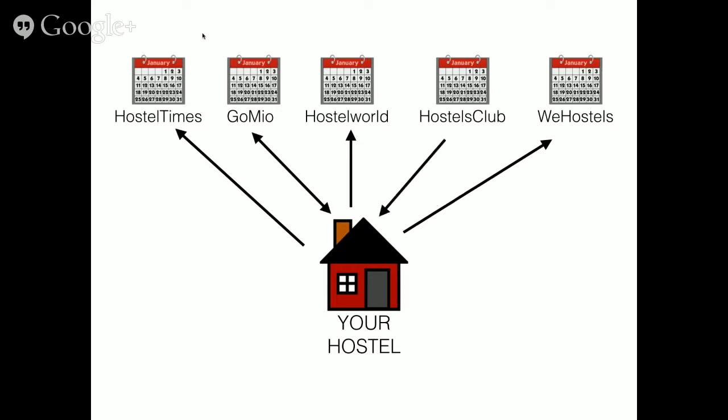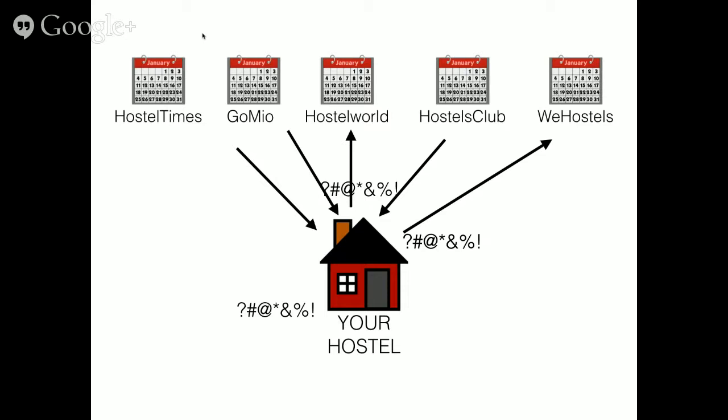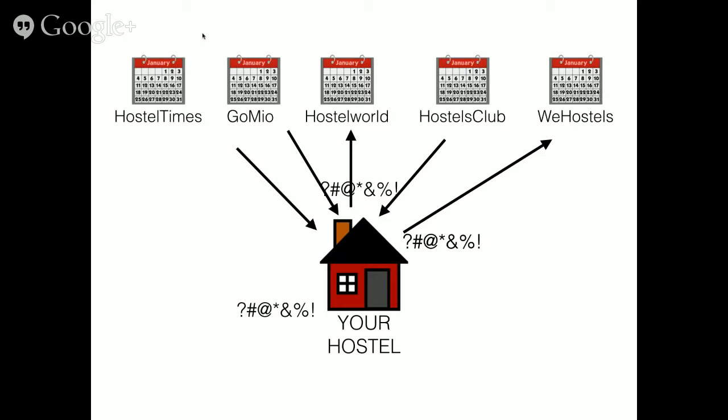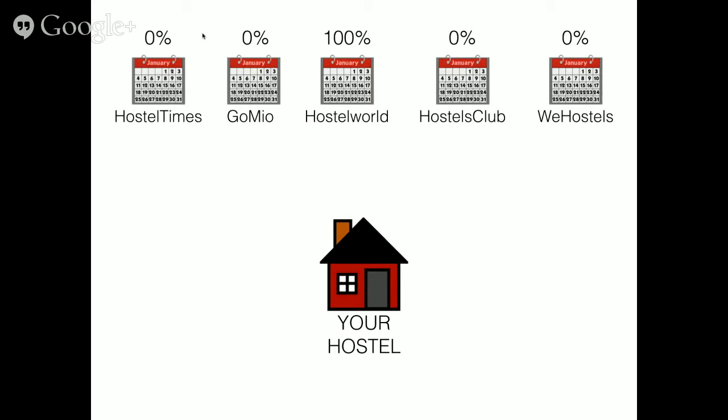You get one reservation from one site and you're trying to keep it synced with your own calendar, your own system in your hostel. But now you've got to communicate it to all the others and it's just very, very frustrating. What winds up happening for a lot of hostels — and this is not even necessarily a conscious decision — is they'll wind up giving all of their inventory back to Hostel World. They basically don't manage their calendars on all of those other booking sites, eventually the dates pass, and they're back to the same starting point. This happens for a lot of hostels.